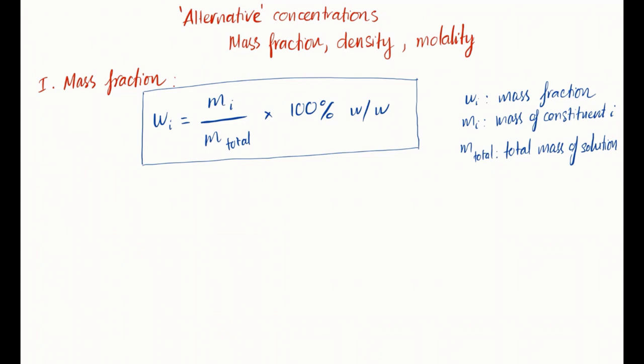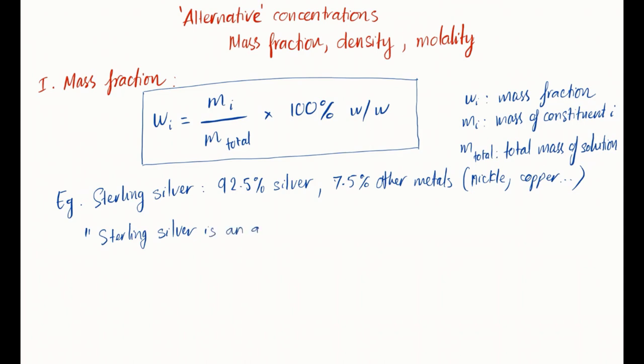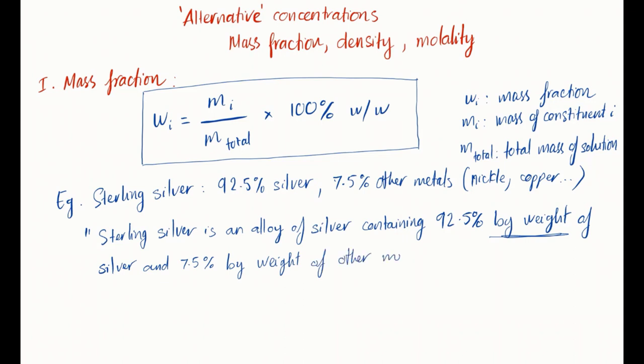From the solutions video, we talked about sterling silver being a solution, with silver being the most abundant at about 92.5% of the alloy, and other metals like nickel and copper taking the remaining 7.5%. You will often hear people saying that sterling silver is an alloy of silver containing 92.5% by weight of silver and 7.5% by weight of other metals.